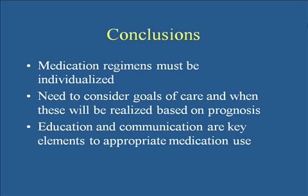In conclusion, medication regimens must be individualized. Use implicit criteria — focus on the patient first and goals of care, then tie medications to that individual. Goals of care must consider when benefits will be realized based on the patient's prognosis. If their focus is not curative or life-prolonging, medication regimens can be simplified. Education and communication are key elements to appropriate medication use — not just for patients and families but also for colleagues and all those helping care for the patient. Thank you for your attention.